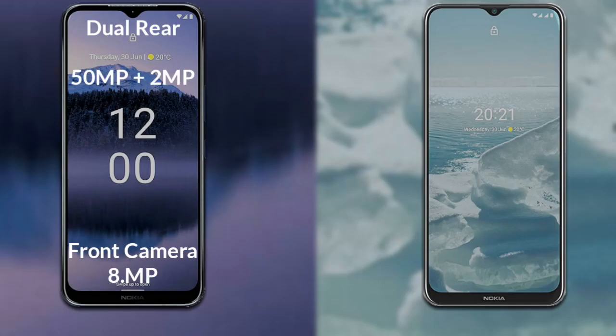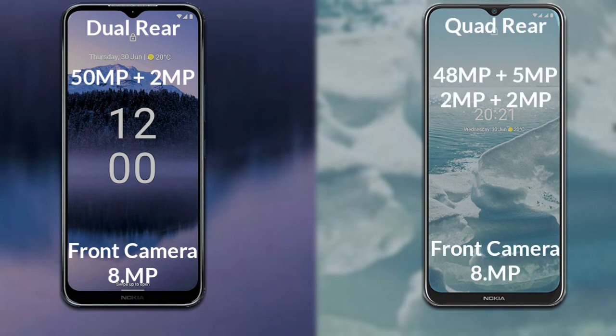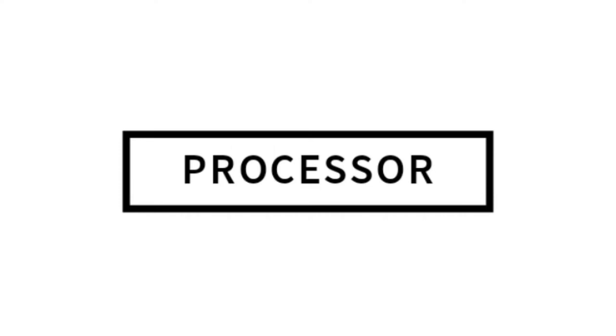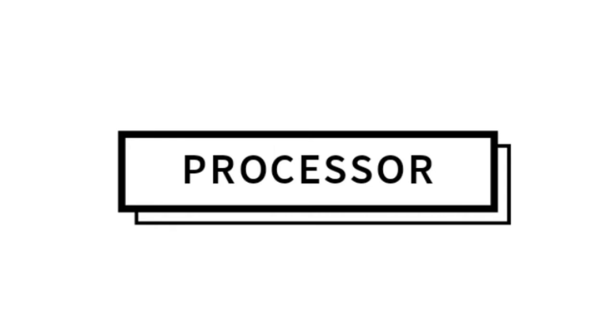Now let's compare the cameras. The Nokia G11 Plus has a dual rear camera setup: a primary camera of 50 megapixels, a secondary sensor of 2 megapixels, and an 8-megapixel front camera. The Nokia G20 has a quad rear camera: a primary camera of 48 megapixels, a secondary sensor of 5 megapixels, a third sensor of 2 megapixels, a fourth sensor of 2 megapixels, and an 8-megapixel front camera.